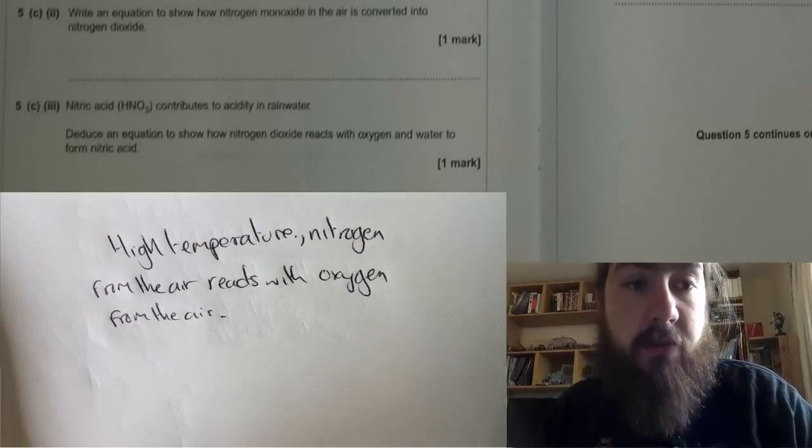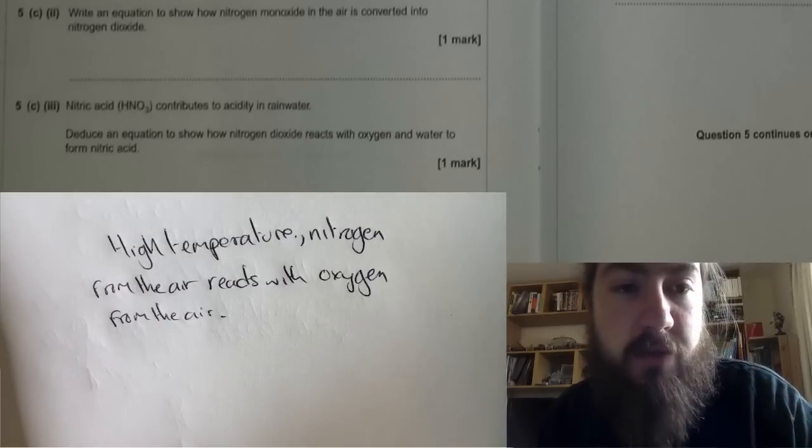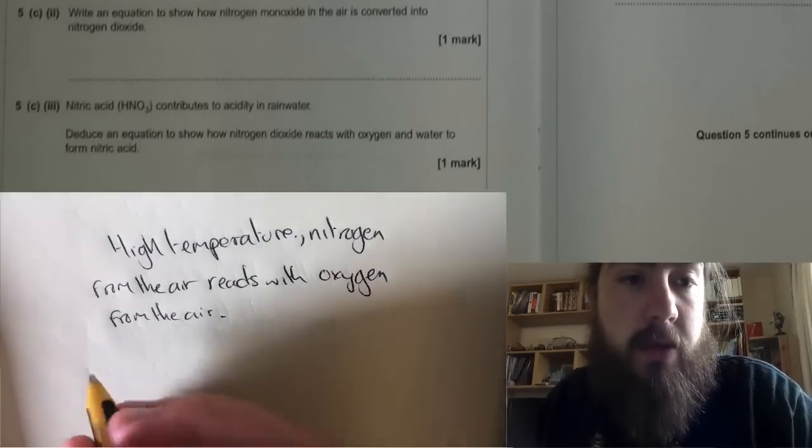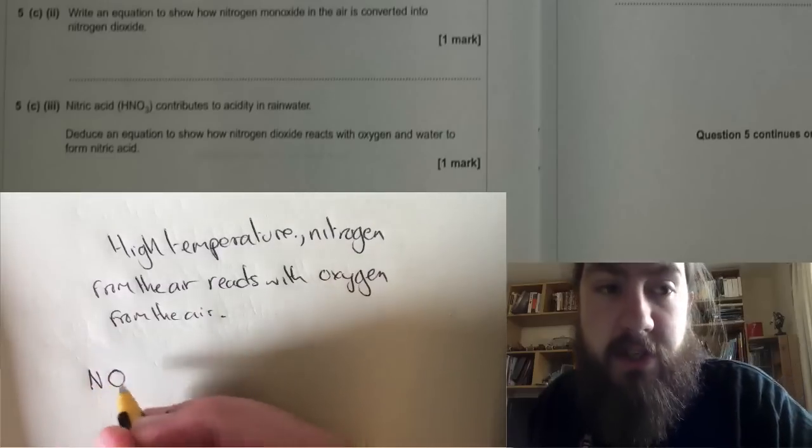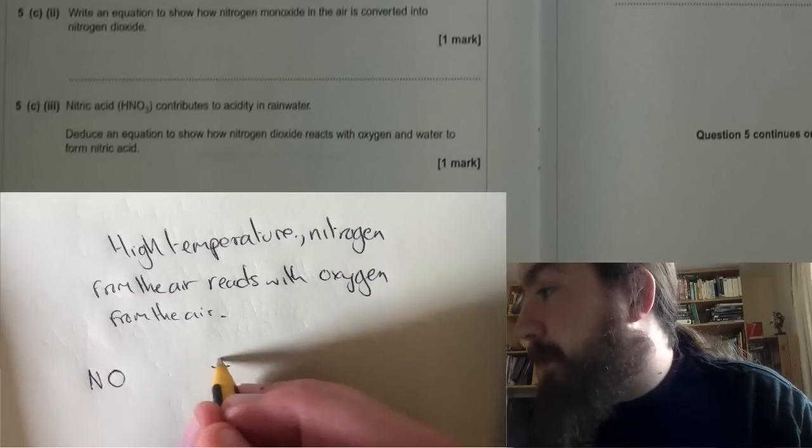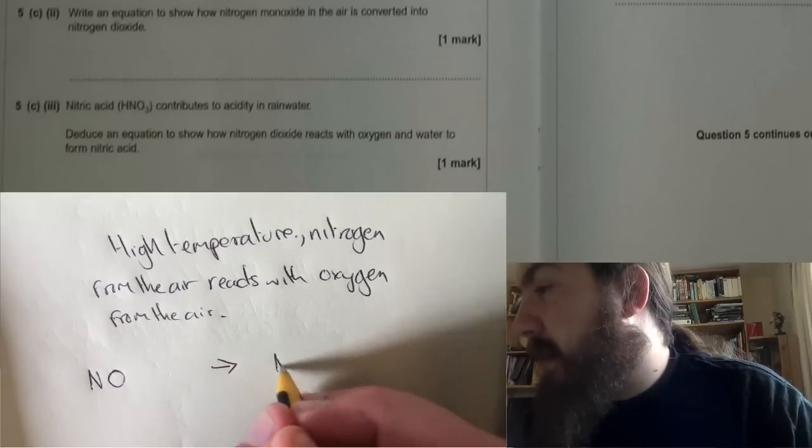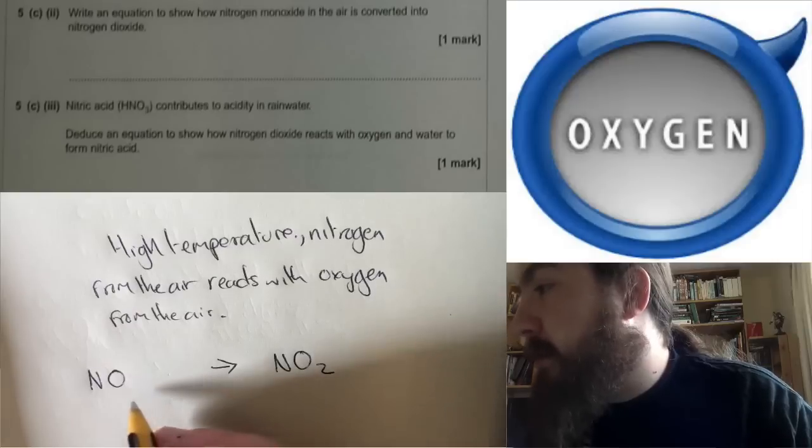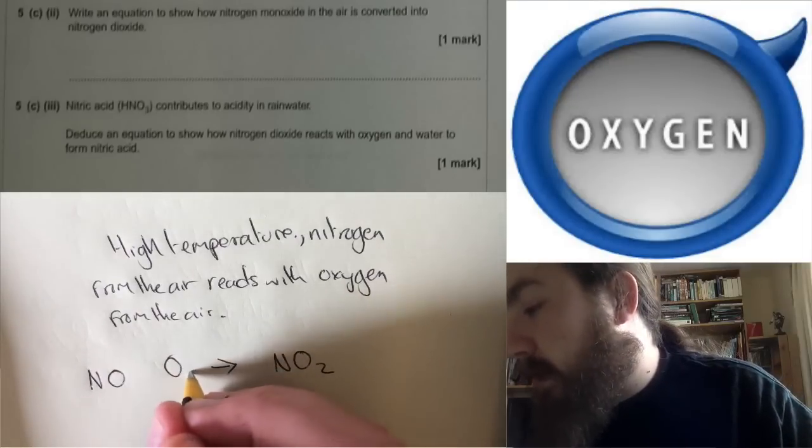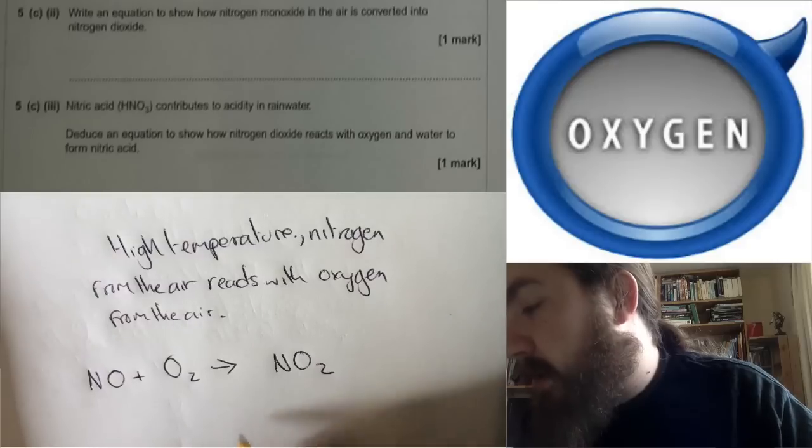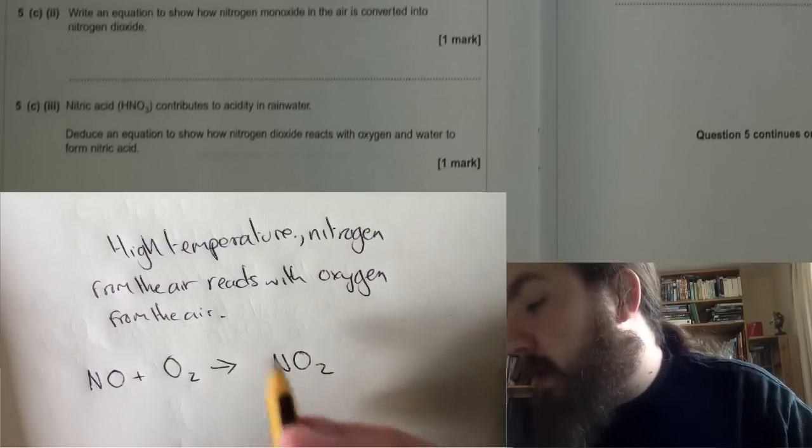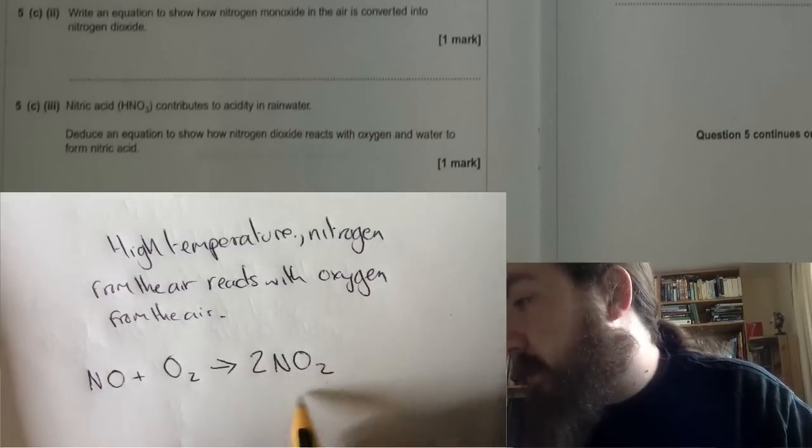5c part two. Write an equation to show how nitrogen monoxide NO in the air is converted into nitrogen dioxide NO2. Obviously we must be adding something here, we're going to be adding oxygen. So NO plus O2 goes to NO2. We need to balance it: we've got three oxygens on this side, two on this side, we can put a two in front of here so we get a total of four, and a two in front of here so we get a total of four.